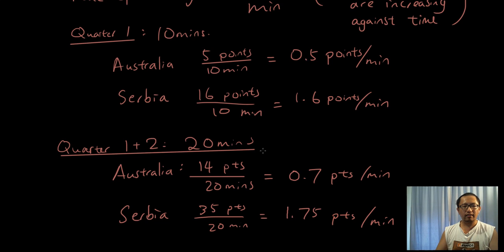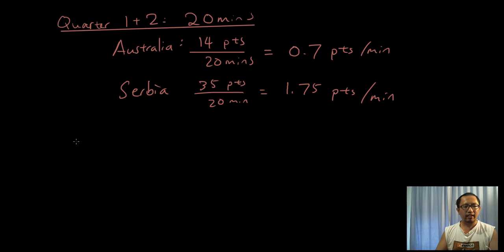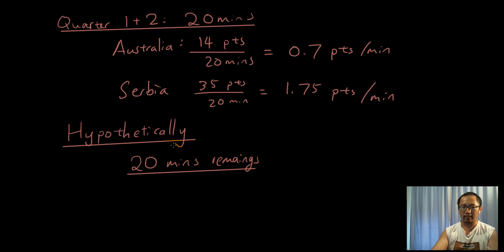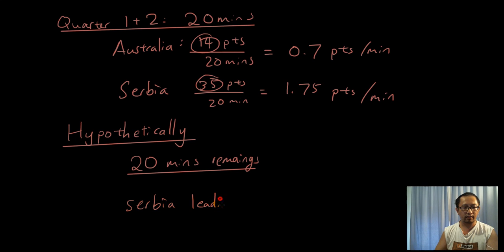We've already done 20 minutes of the game, so we only have 20 minutes left. Let's say hypothetically, at the end of the second quarter, you want to do a mathematical analysis. There are 20 minutes remaining. Serbia was already leading by how many points? Serbia was on 35, Australia on 14 — so Serbia is leading by 35 minus 14, which is 21 points.